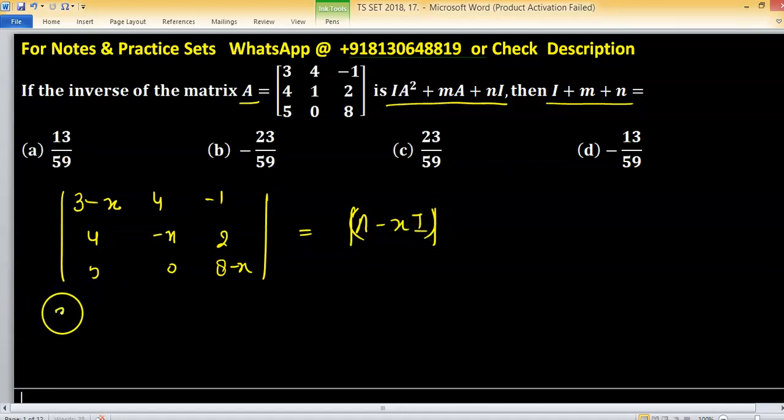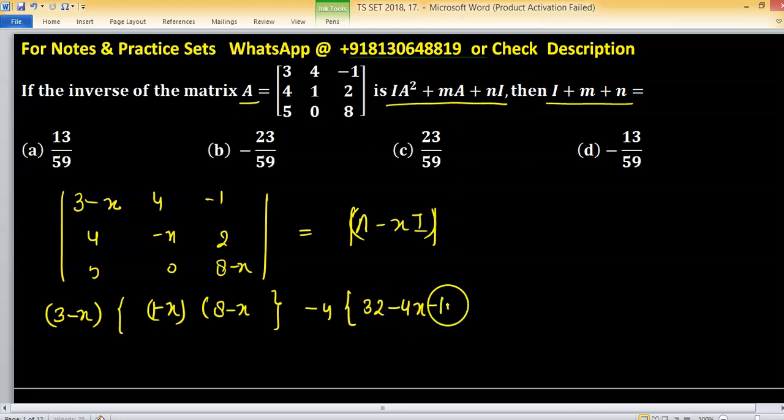After expansion, we have 3 minus x, 3 minus x, 1 minus x, 8 minus x, bracket close, minus 4, 32 minus 4x, minus 10.